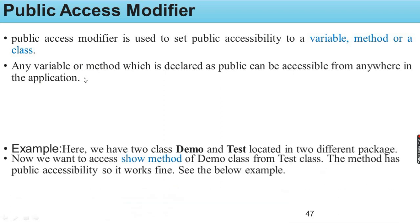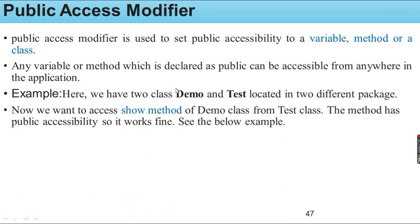Let's say we have two classes. When we have a Demo class and a Test class, the Demo class can be accessible to the Test class. Now, if you want to access the show method, the show method is defined in the Demo class. So if you want to access the class from the Test class, we use demo dot show. Let's look at this access example.